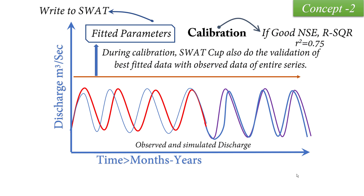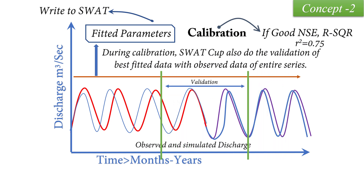SWAT-CUP will use the fitted parameters, simulate the model, and compare it with observed data during calibration — that is called the best simulation. We can do the validation on any set of data, and we don't even need to validate this data in SWAT-CUP. We can do a simple X and Y series validation at any set of points in Excel as well. Because if our calibration data provides a good R-squared from the best simulation, it will also provide a good R-squared in Excel or any other program, since all the series is calibrated and validated in this scenario.